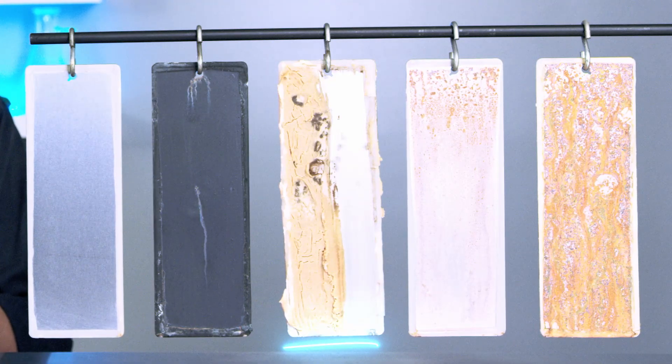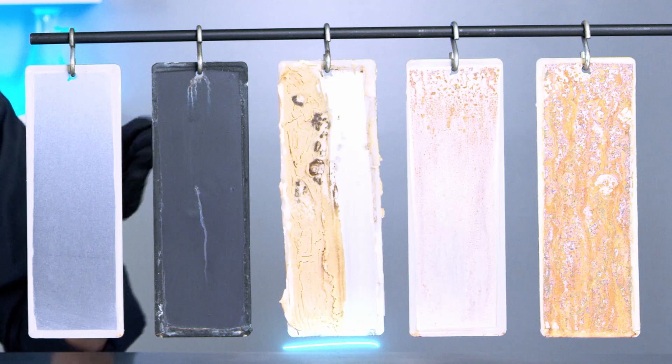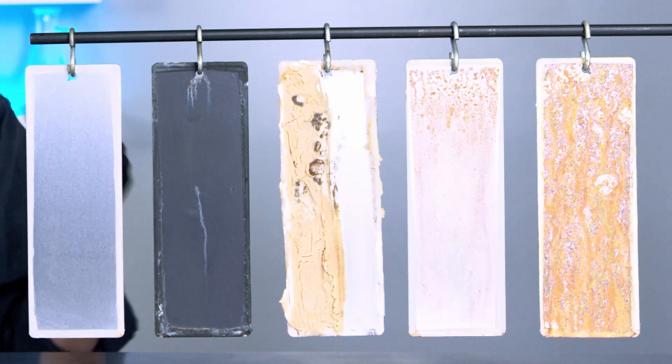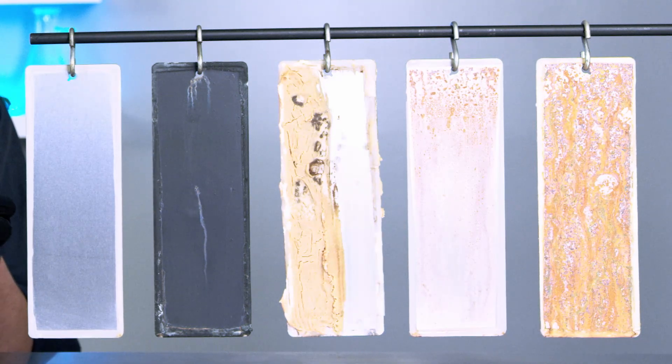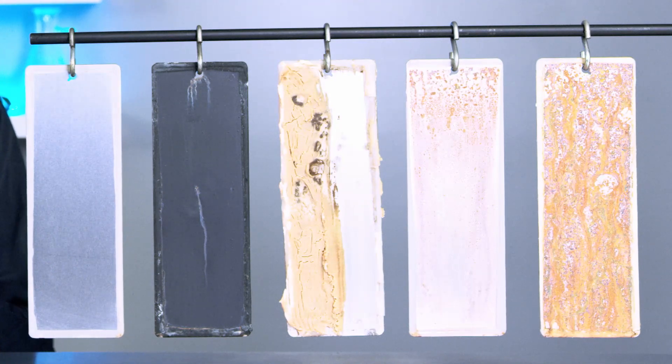The third panel we applied peanut butter, and you can see we've removed half of the peanut butter so you can see the bare metal, and it has held up quite well at preventing corrosion on that metal.